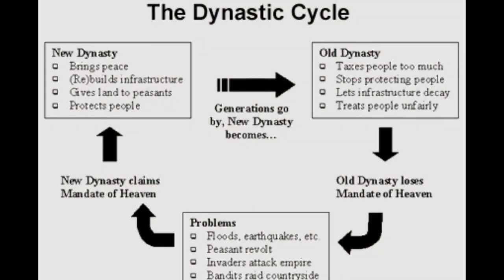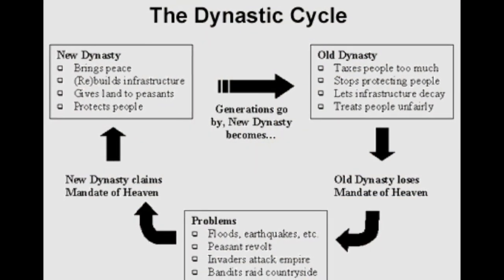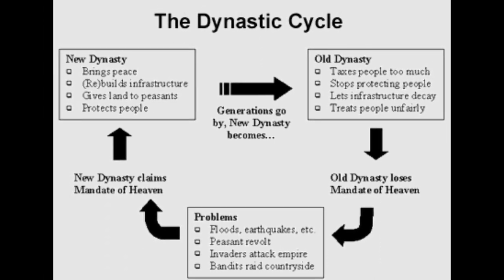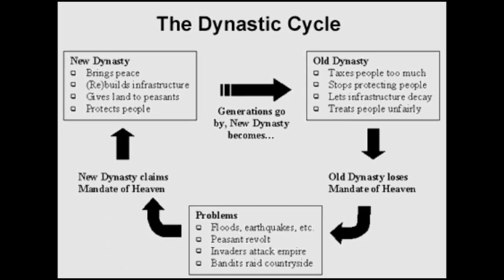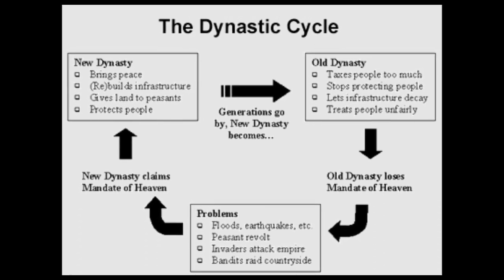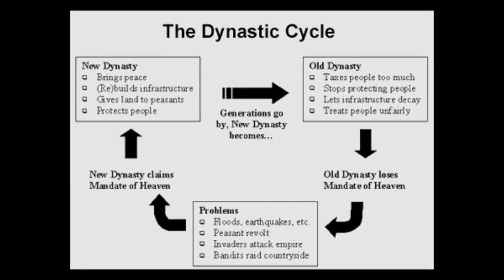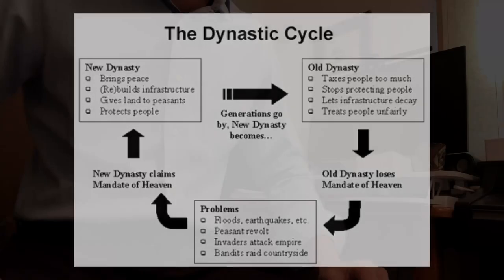Basically, the idea of the mandate of heaven is this: A leader will be mandated by heaven and he will create a great dynasty. And this great dynasty will later be corrupted by evil men. And when this happens, the heaven will mandate a new leader who will rise up against the evil men.